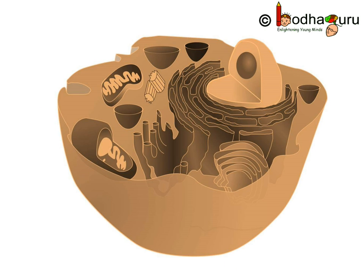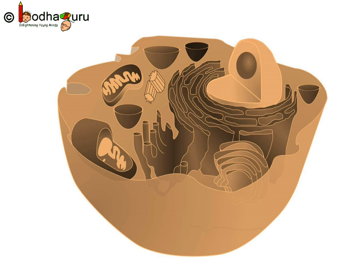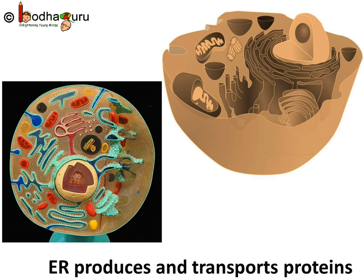Now what comes to your mind when you see this amazing network? It looks like a network of tunnels. So does it do any transportation related work? Yes, endoplasmic reticulum also serves as a channel for transportation between different parts of cytoplasm or between cytoplasm and nucleus. So endoplasmic reticulum not only produces protein, it also transports them whenever needed. It does the same with the fat it produces.